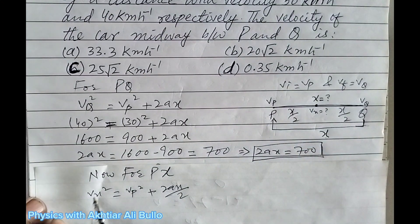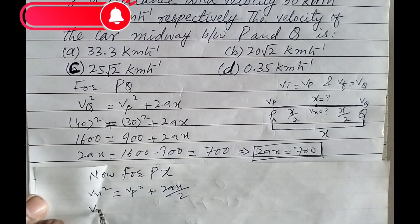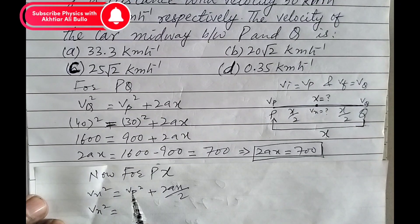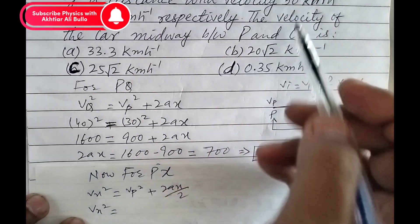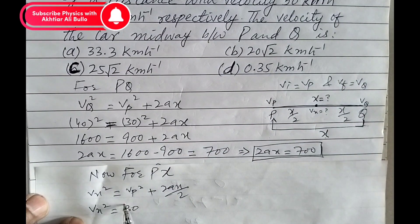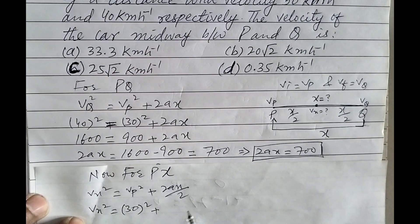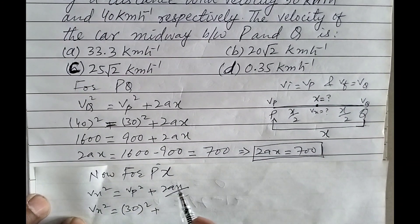So we have to find Vx. Vx² will be equal to the square of Vp. As the value of Vp is 30, so 30² plus the value of 2aX is 700.